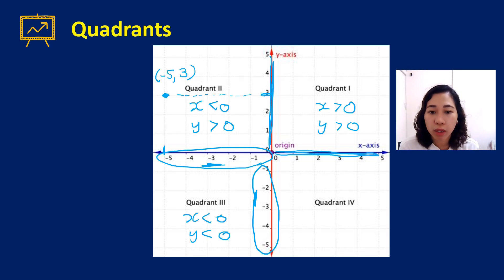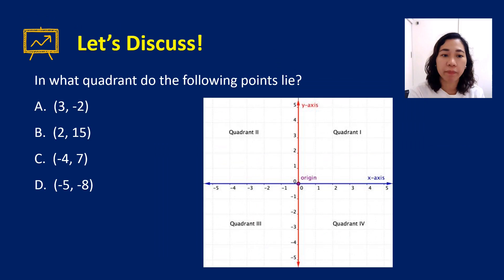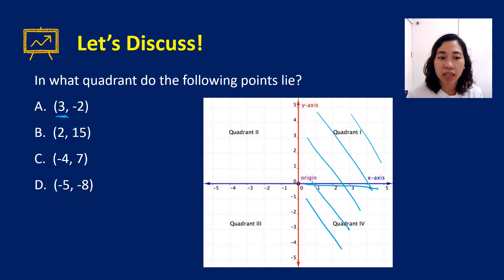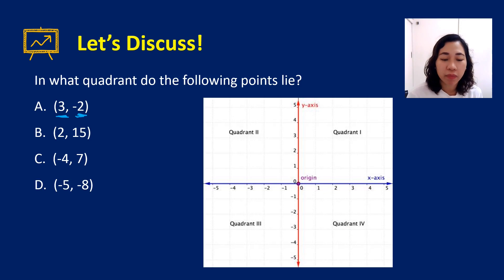In quadrant three, both x and y coordinates are negative. In quadrant four, x coordinates are positive but y coordinates are negative. For example, the point (3, -2): since x is positive you're on the right side, but y is negative, so the answer is quadrant four.